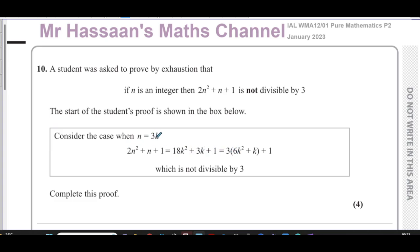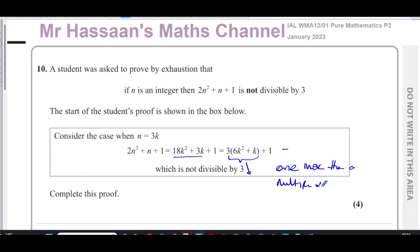When you replace n with 3k, you have 2 times 9k², which is 18k², plus 3k plus 1. If you take out a common factor of 3 from the first two terms, you end up with 3 times something, so that part is divisible by 3. But then you have plus 1, so the whole expression is one more than a multiple of 3, and therefore it's not divisible by 3.